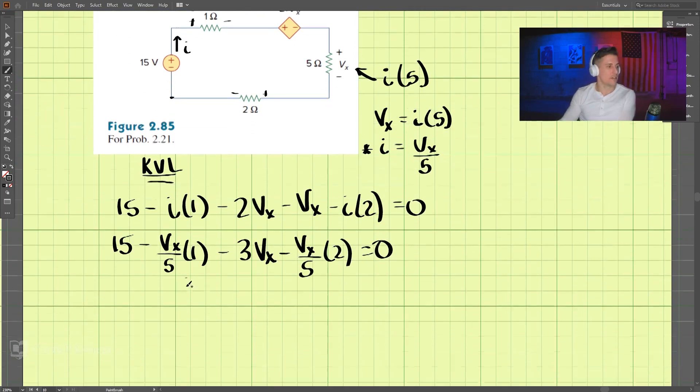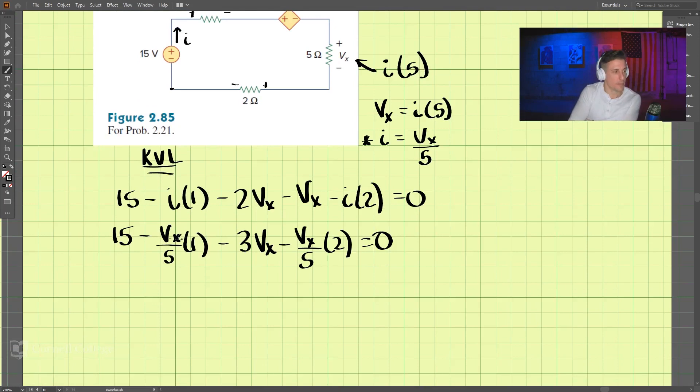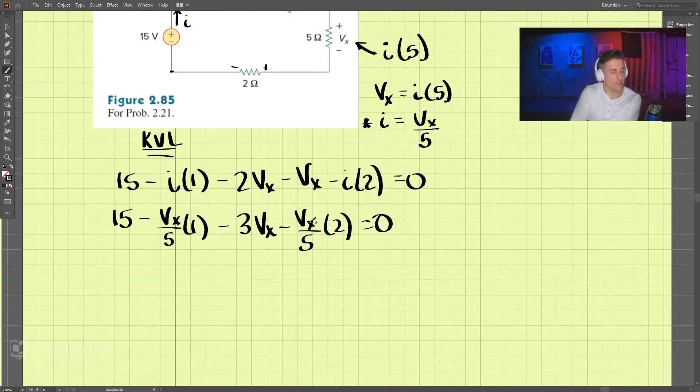So let's keep going with this. So we have 1 5th, 2 5th, let's see. What's that come out to be? 15 minus 3.6 Vx equals 0.